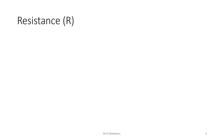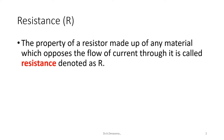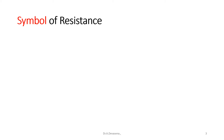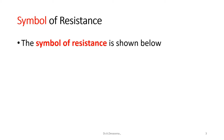Let us start discussing about the resistance. The property of a resistor made up of any material which opposes the flow of current through it is called resistance and it is denoted as R. The resistance is measured in ohms. Now we see the symbol of the resistance. The symbol of the resistance is shown below. This is the diagrammatic representation of the resistance.